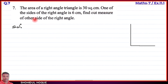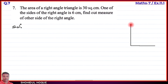Find the measure of the other side of the right angle. To solve this, we consider the right angle triangle. The base and perpendicular are the two sides that form the 90-degree angle.